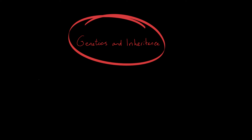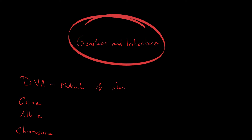There are a few terms you need to know: DNA, gene, allele, and chromosome. DNA is the molecule of inheritance. Importantly, DNA is not separate from genes, alleles, and chromosomes — it's what makes up genes and chromosomes. An allele is just a type of gene. DNA stands for deoxyribonucleic acid.